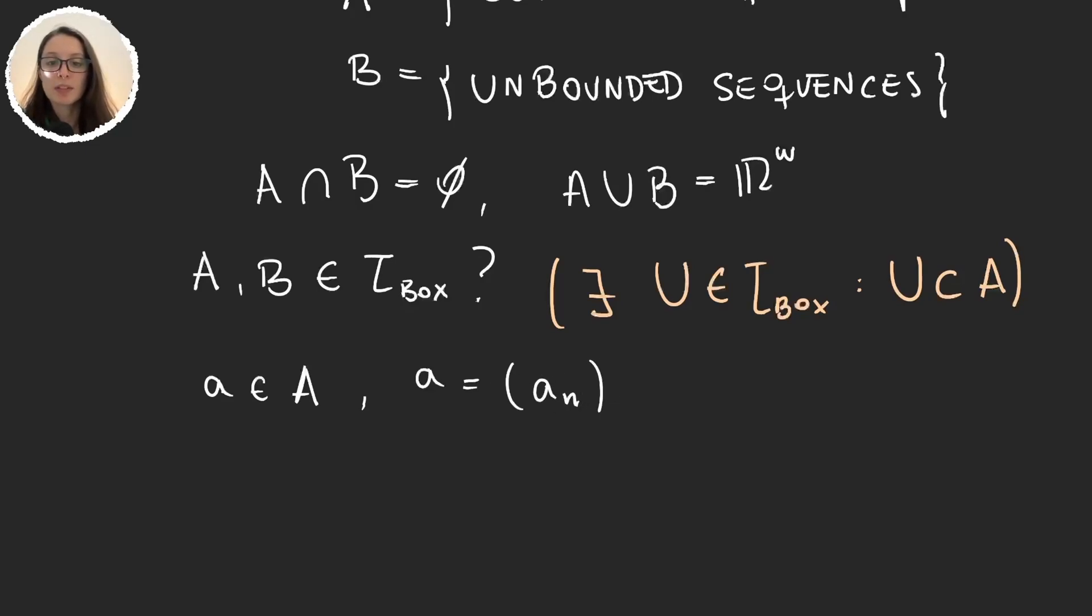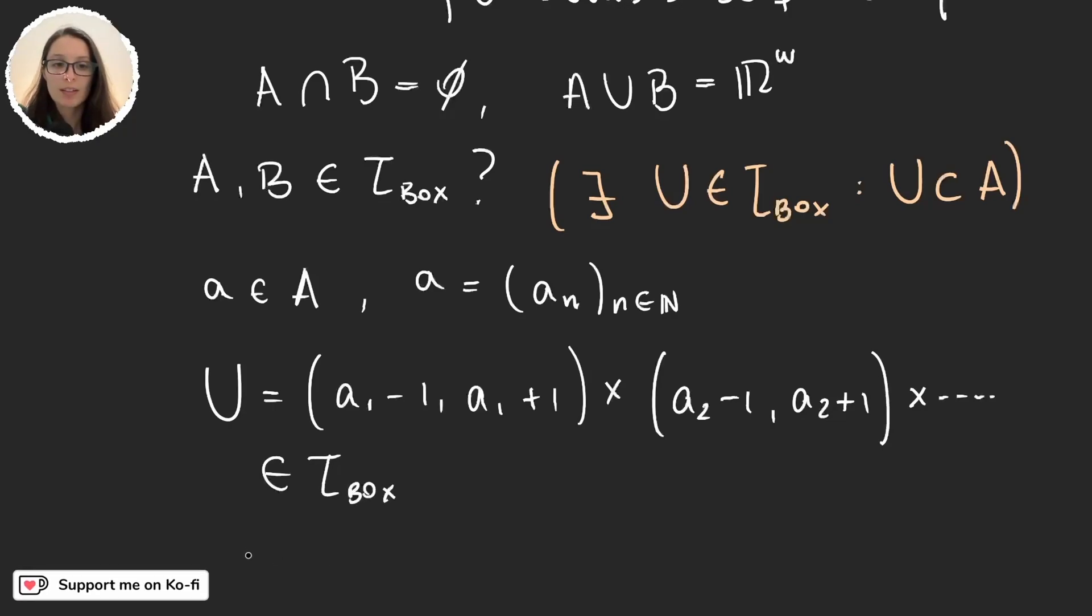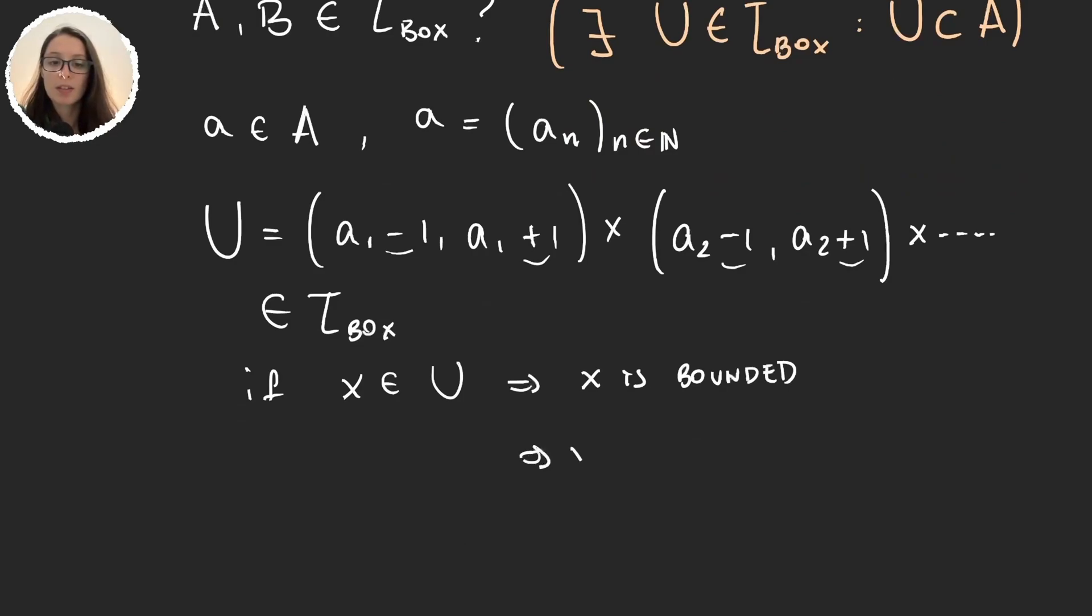What we can do is take the set U to be A1 minus 1, A1 plus 1, this is just a usual interval in the real line, times A2 minus 1, A2 plus 1, and so on. So obviously this is an element in the box topology and if I take an element in U then because I'm always adding and subtracting 1 on each component then obviously x will be bounded because remember that A was bounded and so if x is bounded then x is an element in A and then A is open.